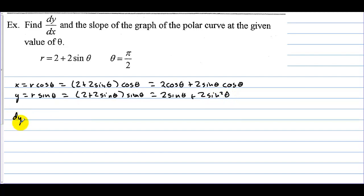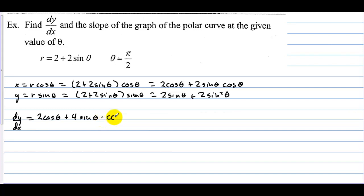We want dy over dx. We want the derivative of y on top. That'll be 2 cosine of theta — the derivative of sine is cosine — then plus 4 sine of theta times cosine of theta, using the chain rule. That is the derivative of y, and now we need the derivative of x.